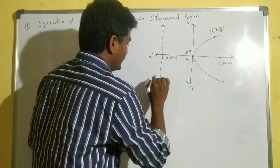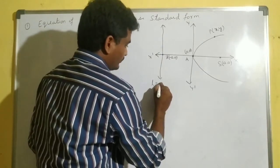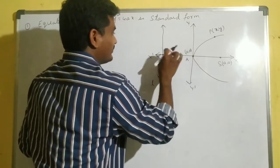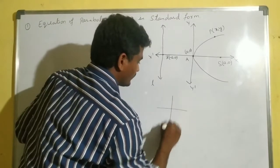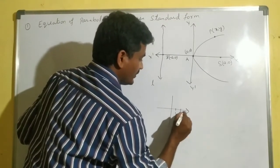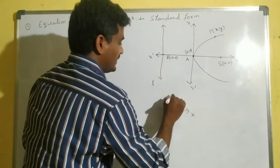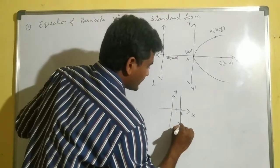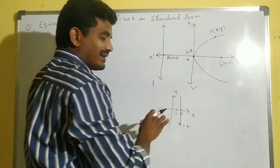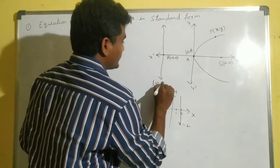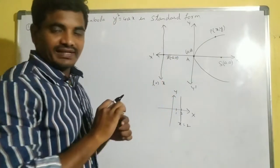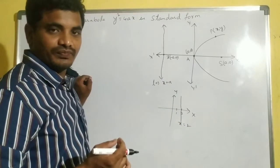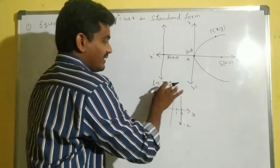I am taking the directrix as L. Its equation we can say: for example, if you draw a line parallel to the y-axis through point 2, its equation is x = 2. Similarly, this directrix line equation is x = -a, which we can write as x + a = 0.